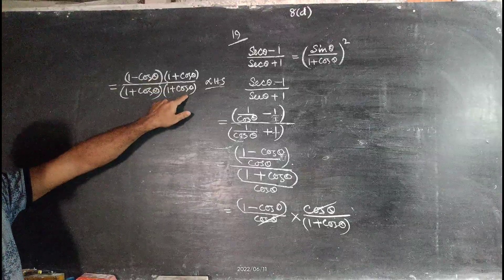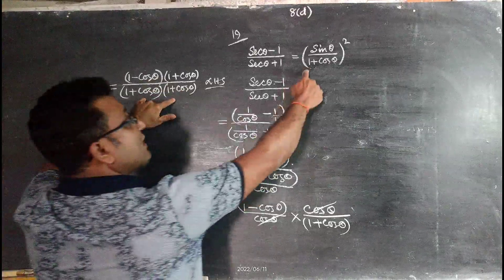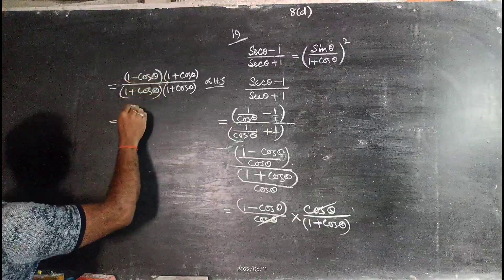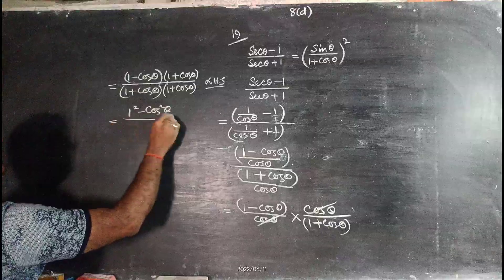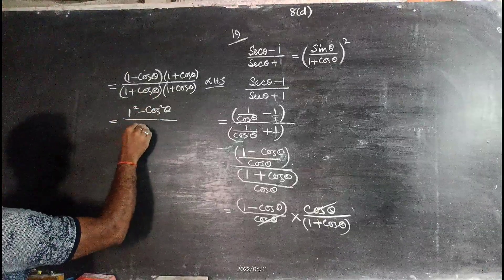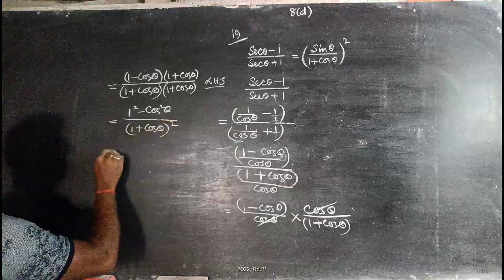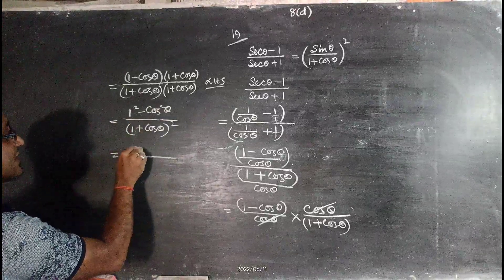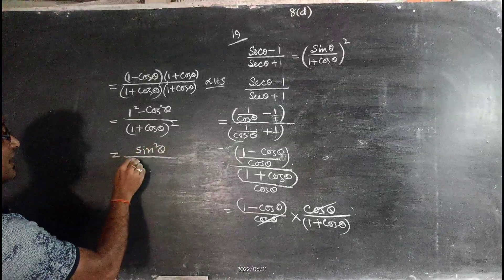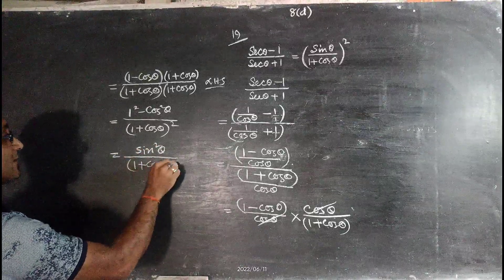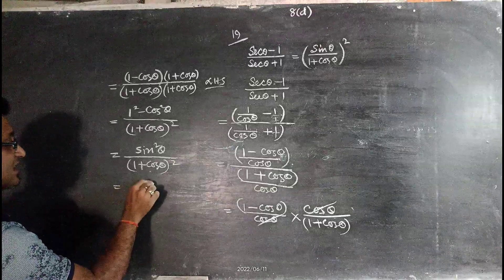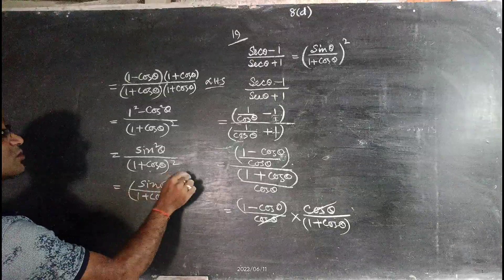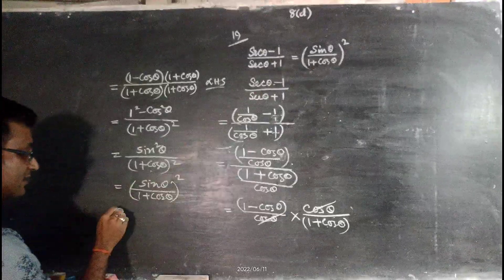Multiplying: numerator becomes (1 - cosθ)(1 + cosθ) = 1 - cos²θ = sin²θ, and denominator becomes (1 + cosθ)². So we get sin²θ/(1 + cosθ)², which can be written as (sinθ/(1 + cosθ))², the required right hand side.